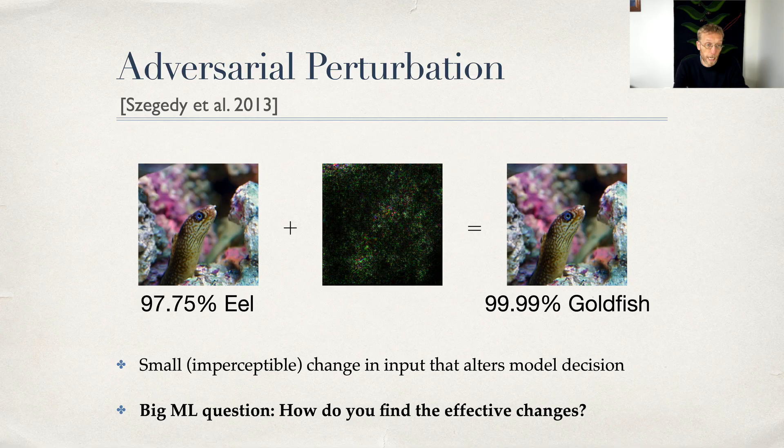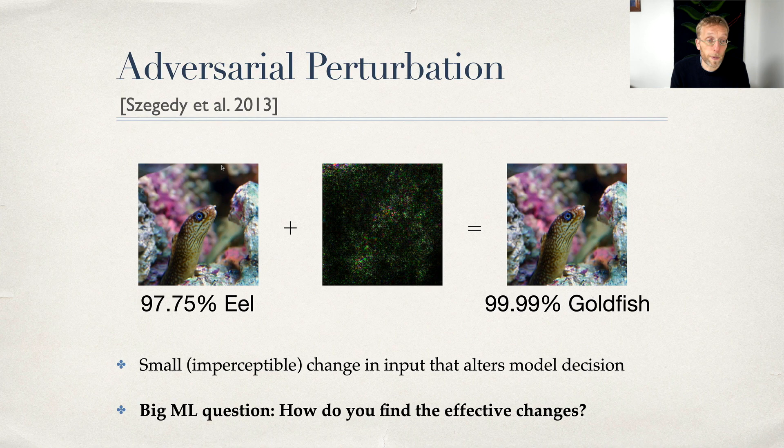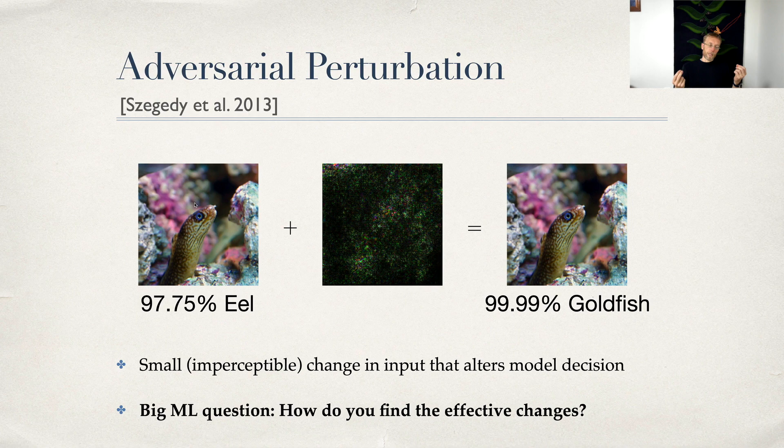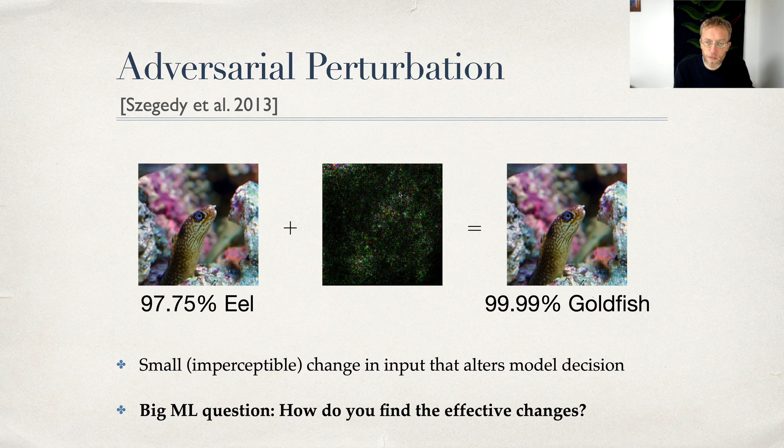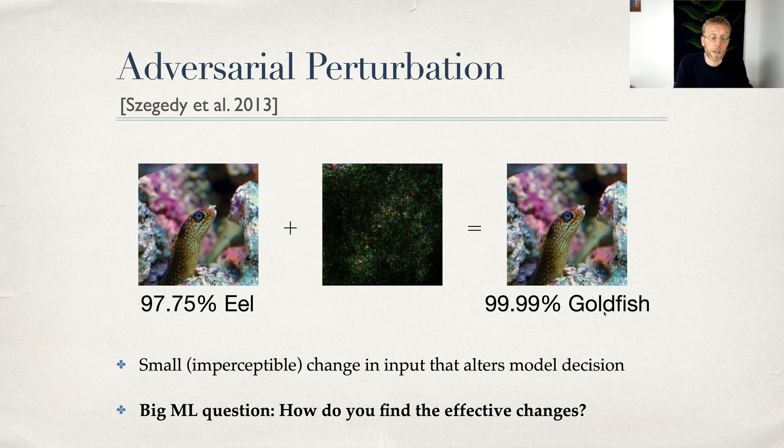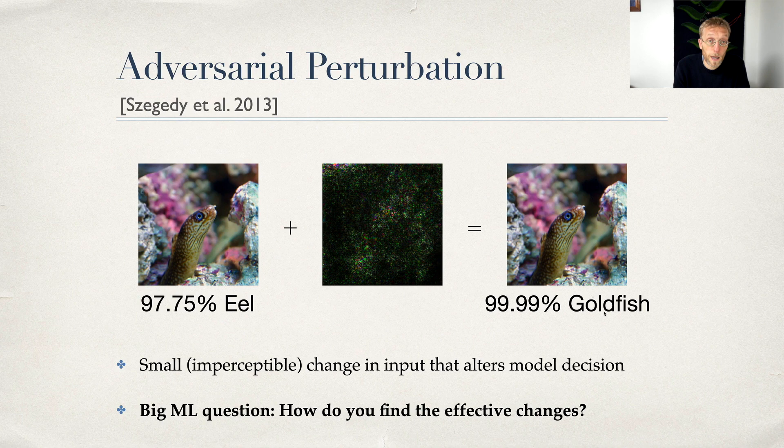Simple black box adversarial attacks was an ICML paper in 2019. The setting is very simple: Szegedy et al. in 2013 discovered that if you take an image and classify it, even if it gets classified correctly with high confidence, you can make very small imperceptible changes to make it be classified as anything else. So here we have an image of an eel, we make small changes, and now the neural network classifies it as goldfish.